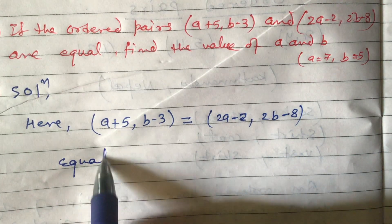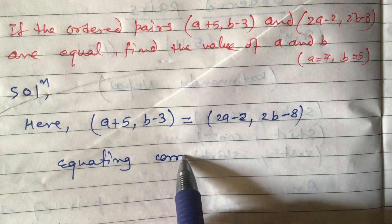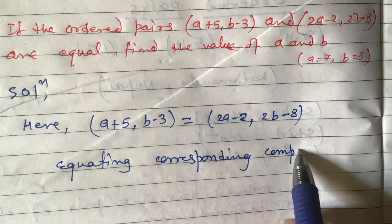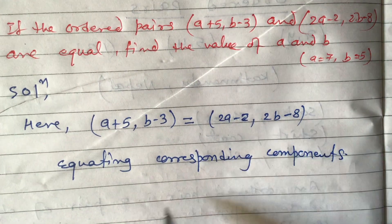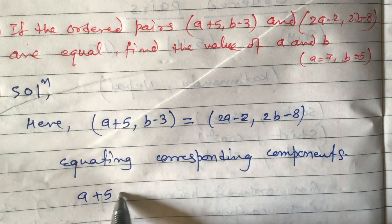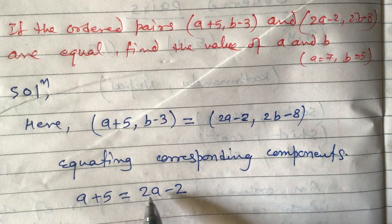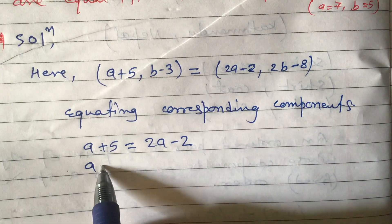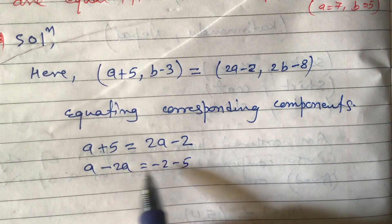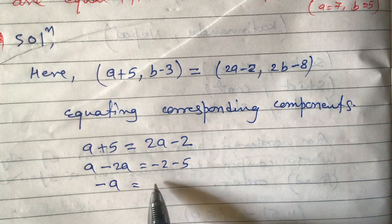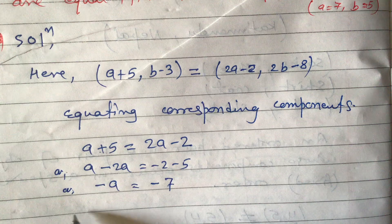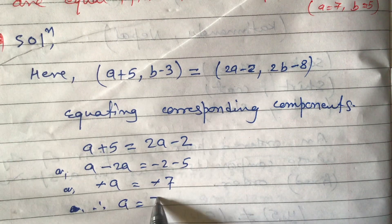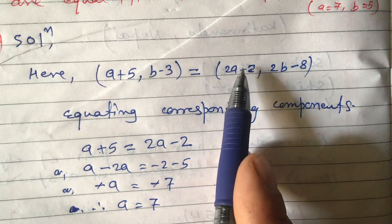Equating corresponding components: a+5 equals 2a-2. Transposing, a minus 2a equals minus 2 minus 5, giving minus a equals minus 7. Cancelling the negatives, therefore a equals 7.